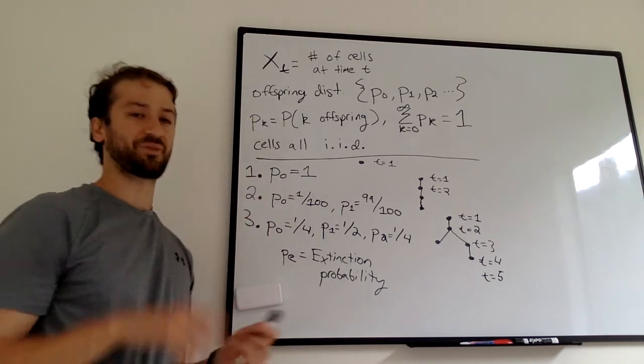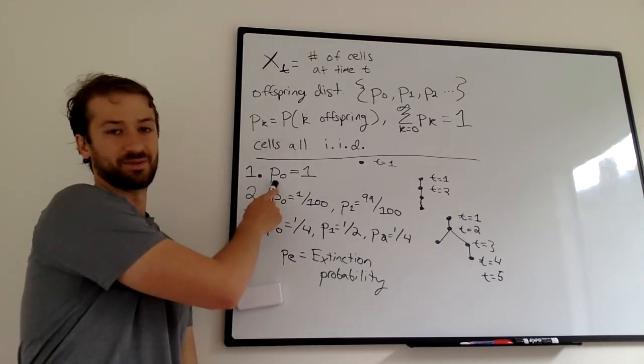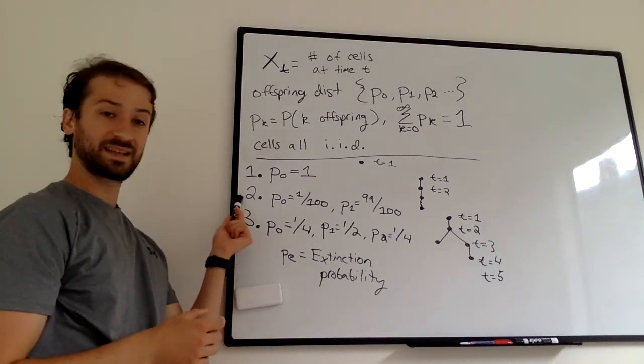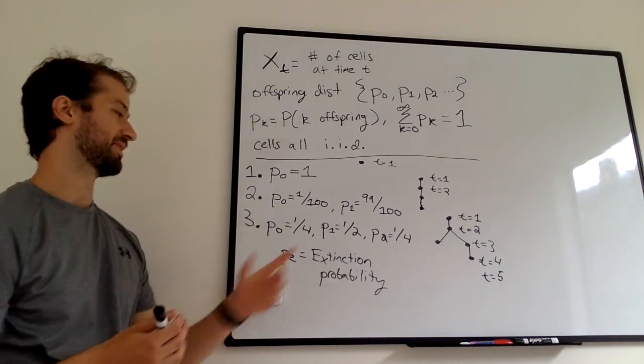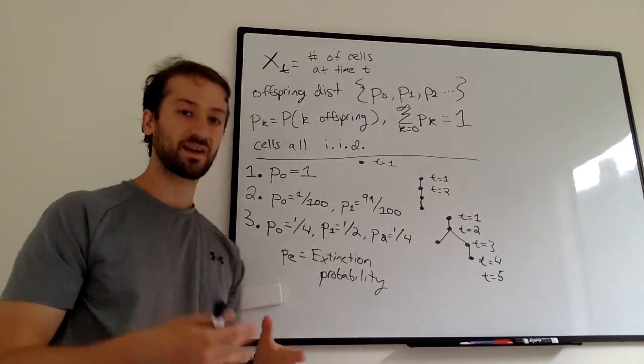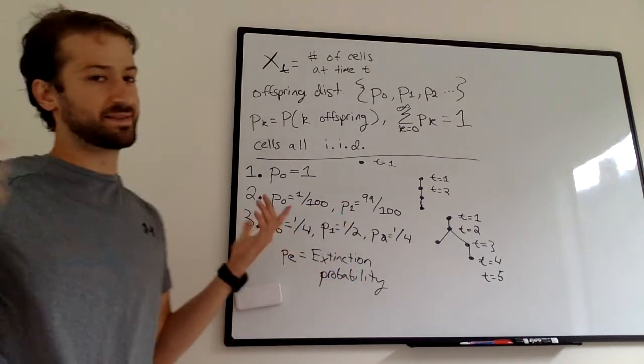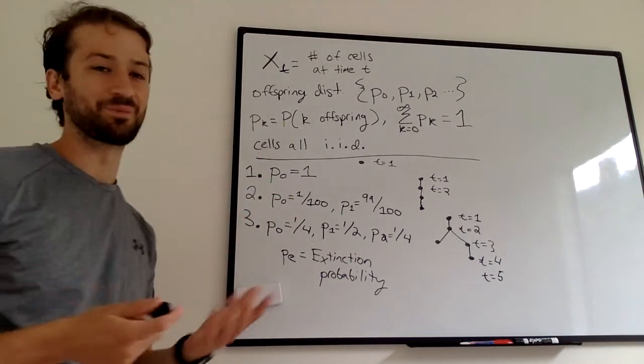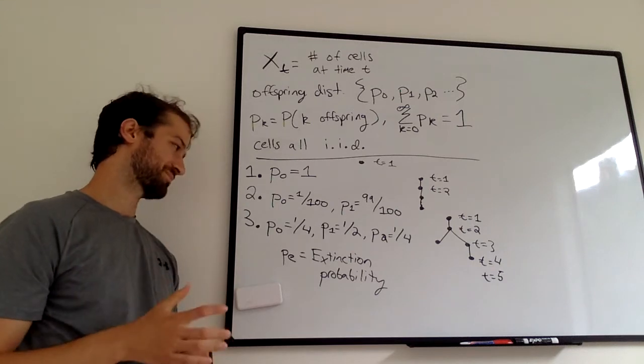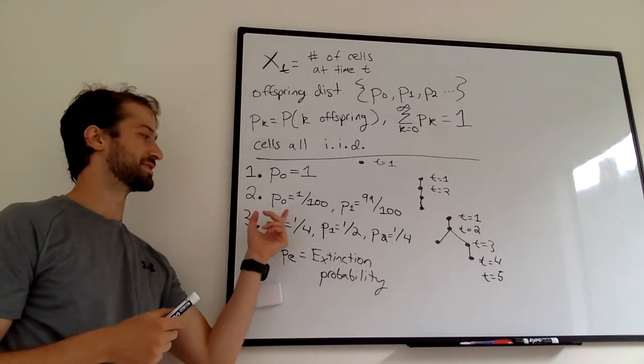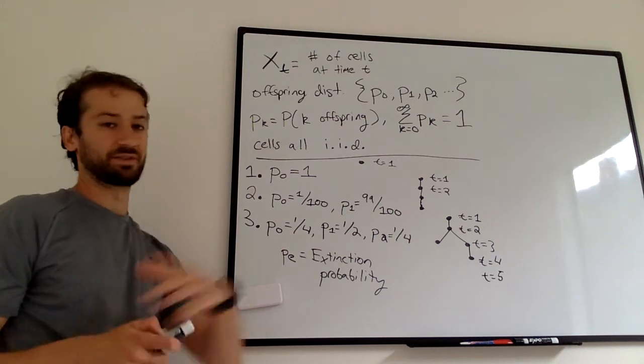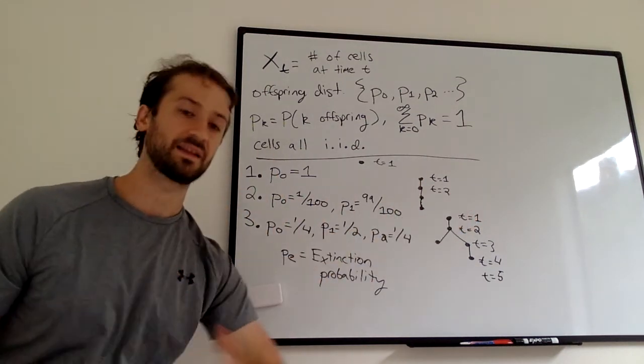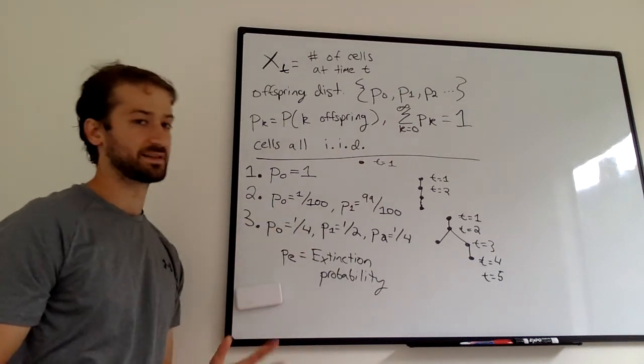P sub E, in this case, is pretty simple. It's 1. This is going to go extinct after 1 time, because there's a 100% chance that you are going to have 0 offspring. P sub E, in this case, is also 1. You're going to have 1 kid most of the time, but as soon as you hit 0, you're probably going to hit 0 within 100 tries, 100 generations, and then you're done forever. And with the population extinct, we're thinking at infinite time. So eventually, you're definitely going to get to 0.